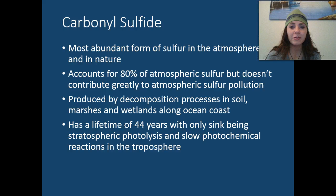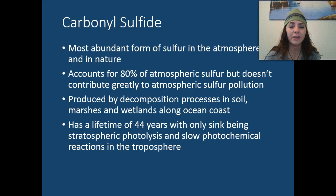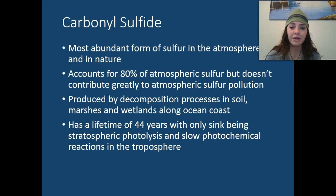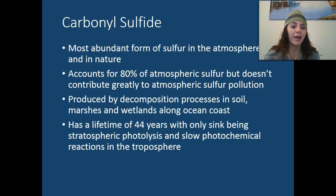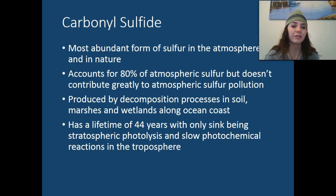The most abundant form of sulfur in the atmosphere is carbonyl sulfide — it accounts for 80% of the atmospheric sulfur, but doesn't contribute greatly to atmospheric sulfur pollution. It's produced by the decomposition process in soil, marshes, and wetlands along the ocean coast, and it has a lifetime of about 44 years, with the only sink being stratospheric photolysis or slow photochemical reactions in the troposphere.